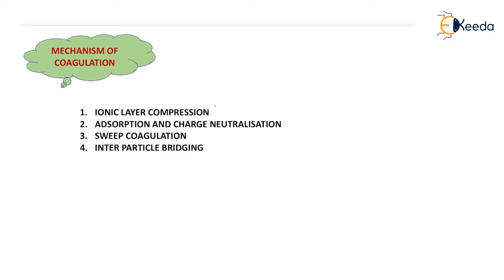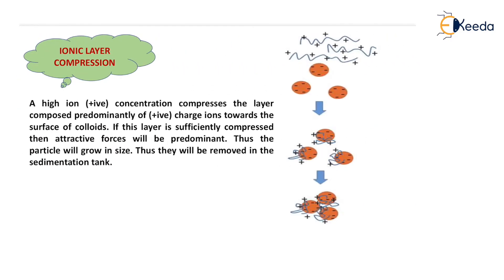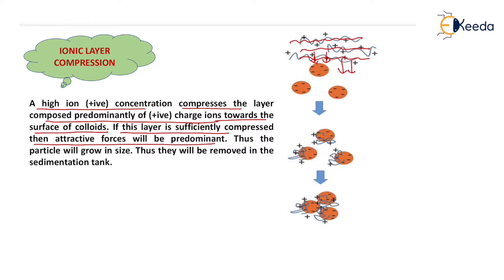The mechanism of coagulation generally takes place in four steps: ionic layer compression, adsorption and charge neutralization, sweep coagulation, and inter-particle bridging. In ionic layer compression, a high positive ion concentration compresses the layer composed predominantly of positive charge ions towards the surface of colloids. When more number of positive charge particles are there, they compress the bottom layer to get in contact with the negative charge. If this layer is sufficiently compressed, attractive forces will be predominant. Thus the particles will grow in size and when the particles grow in size they will be removed in the sedimentation tank.